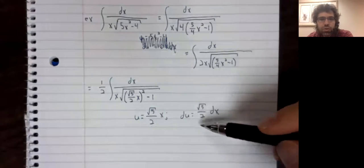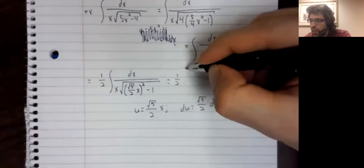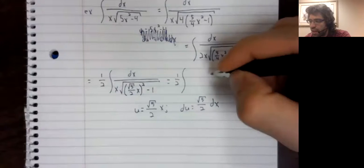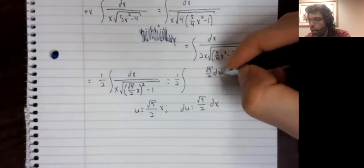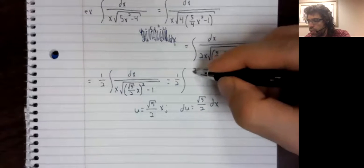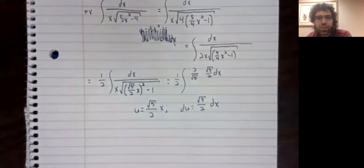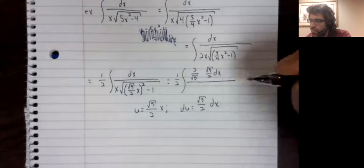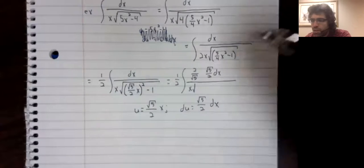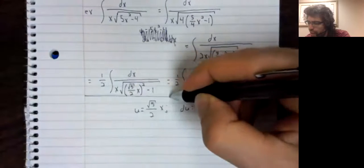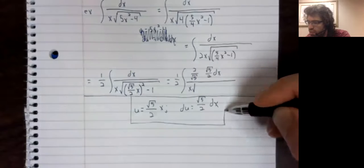We don't quite have this, but we come very close to having it. I mean, we can put a constant here if we want to. We just divide by that same constant so we don't change the integrand. And because we're here, we're getting a little crowded. Let me box this off.